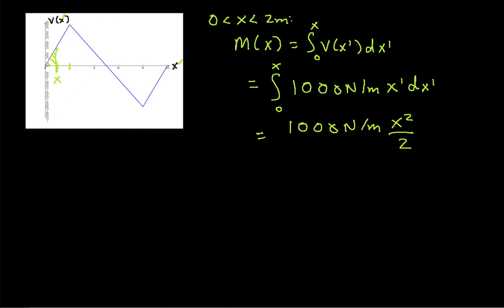Now we need to look at when x is between 2 and 8. This is 2, this is 8. If x is between these two values, then I need to get basically this area. And again, I can get it by integration. So I have M(x). This is 2 meters less than x less than 8 meters. M(x) is going to be the integral from 0 to 2. But I already know what that is. That's M of 2 meters plus the integral from 2 meters to x of v(x') dx'.